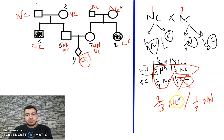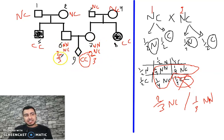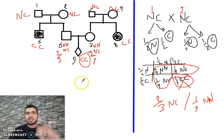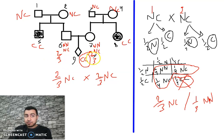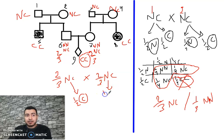So the probability for individual 6 to be NC is 2/3, and similarly for individual 7. We apply the rule: any normal individual with affected siblings has a 2/3 probability of being a carrier (NC). For child 9 to be affected (CC), both parents must pass allele C.